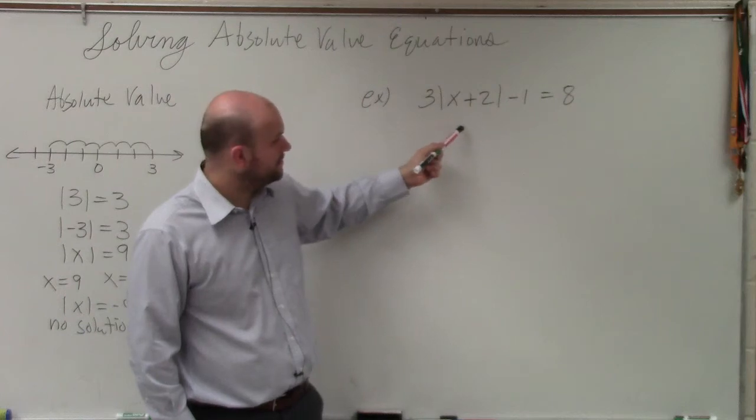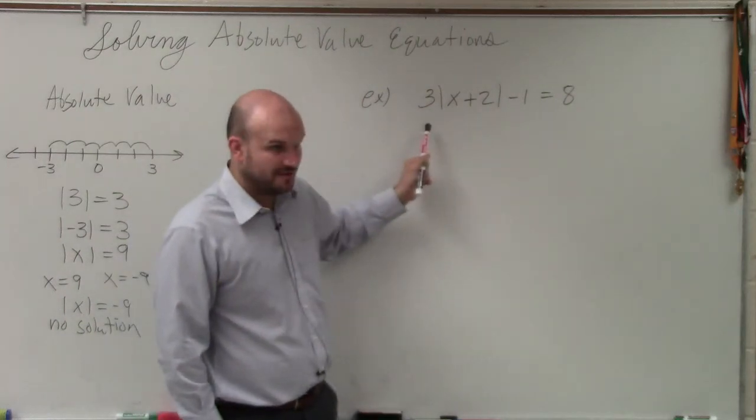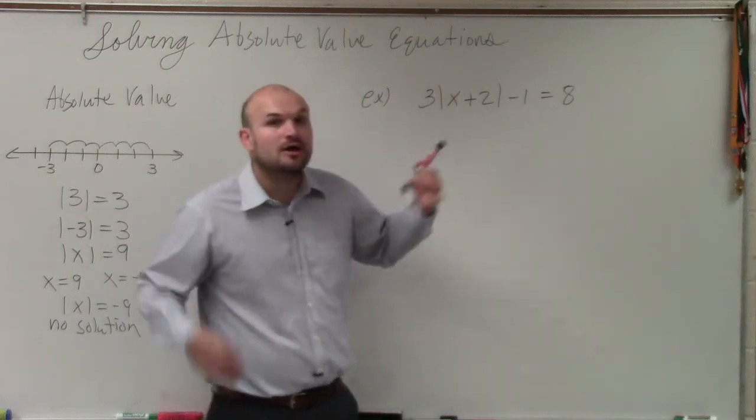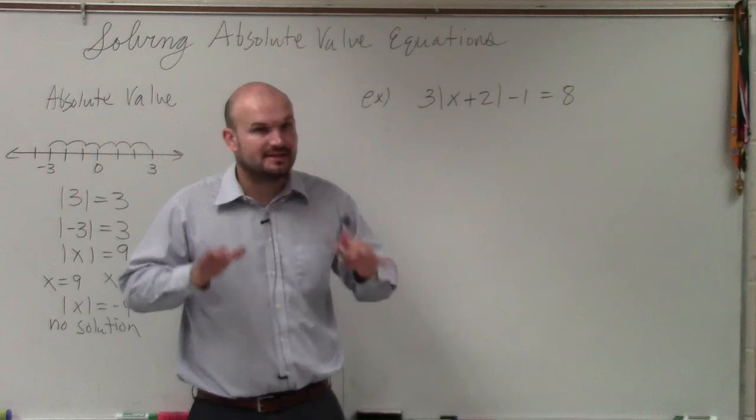So the first thing you guys are going to want to do is isolate the absolute value. You guys can see this absolute value is being multiplied by 3 and subtracted by 1. We want to undo that. We cannot create two cases until we isolate the absolute value.